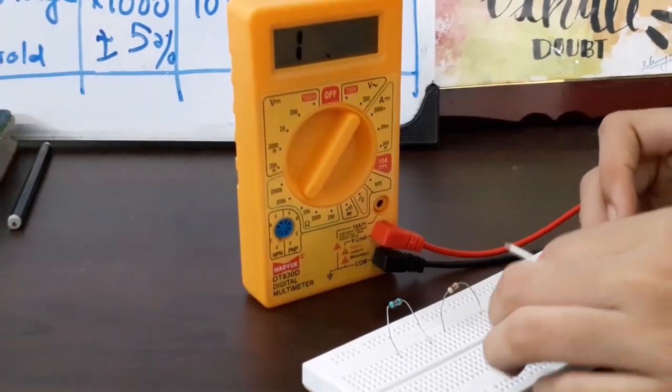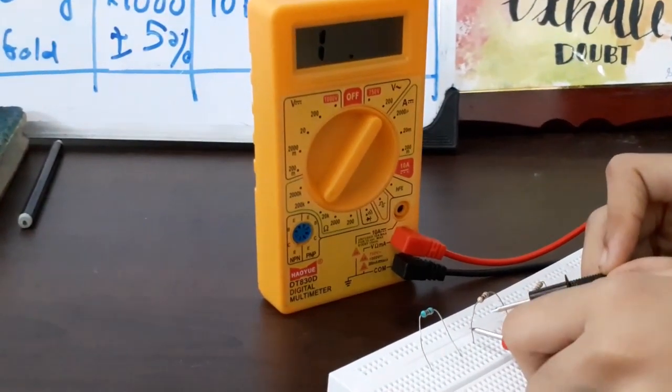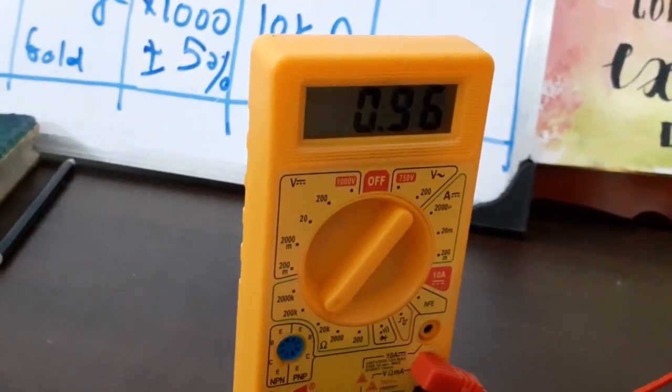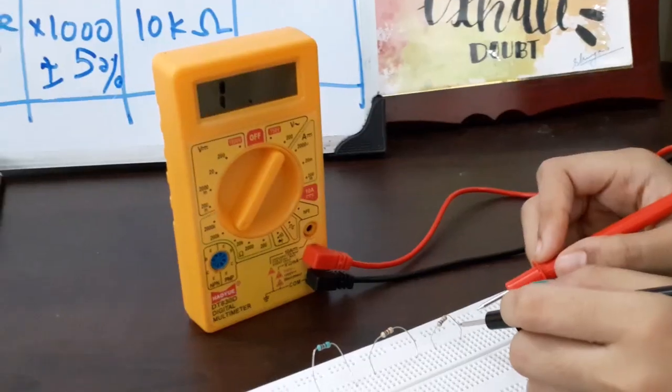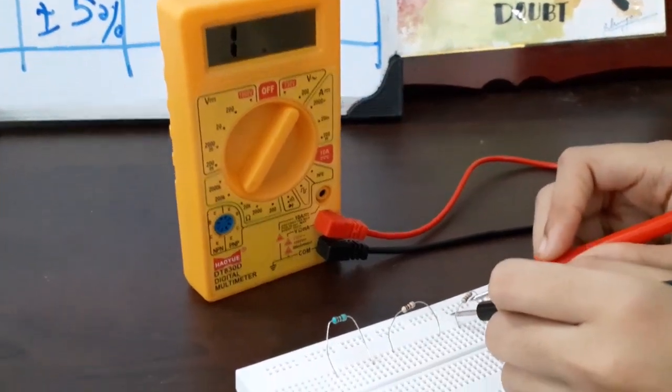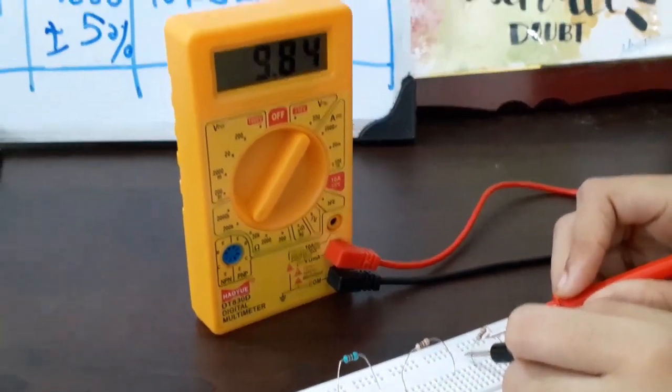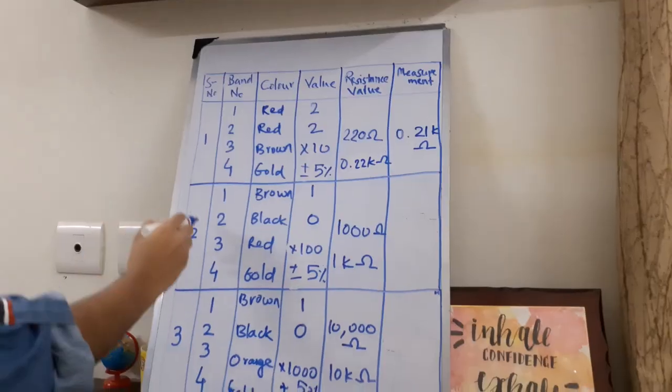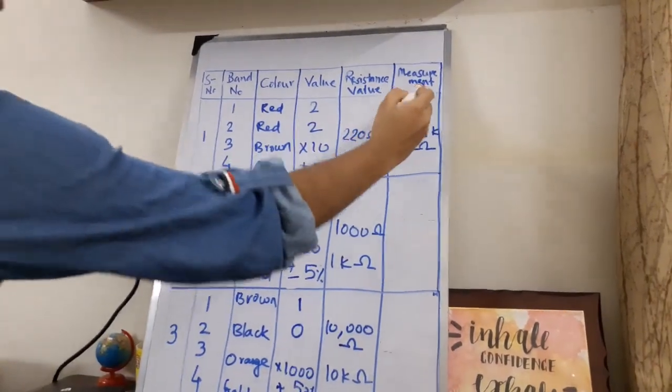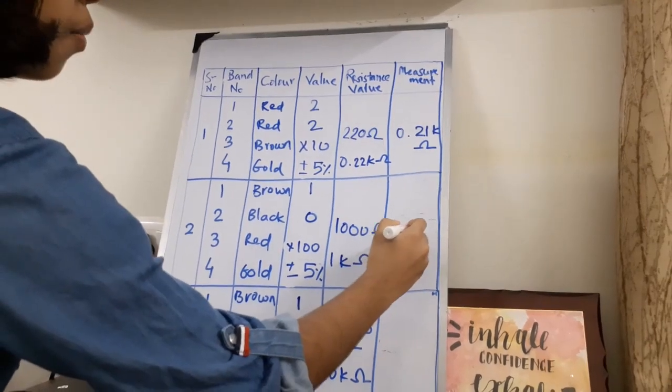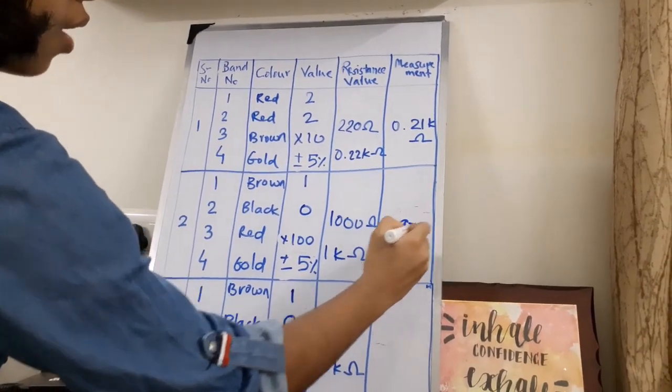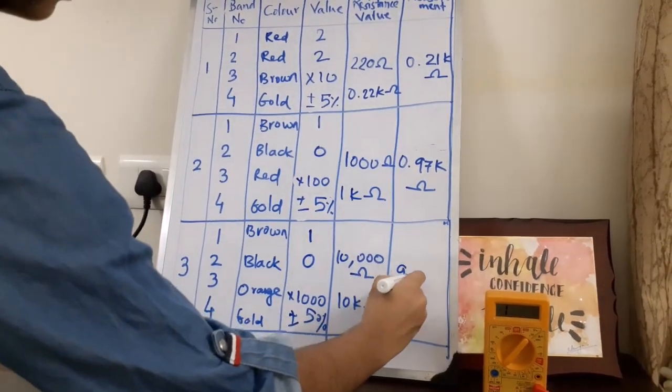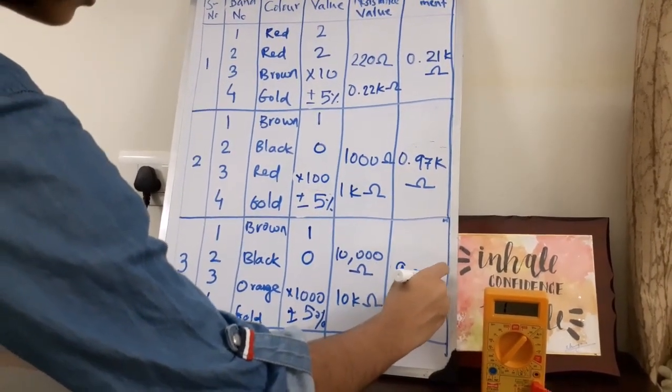Now let us measure for the second resistor, which is coming 0.97 K ohms. Now let us measure for the third resistor. It measures 9.83 K ohms. For the second resistor, the measurement is 0.97 K ohms, and for the third resistor, it is 9.83 K ohms.